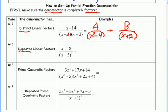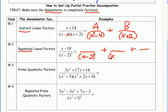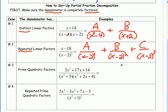Now we have repeated linear factors. A linear factor x minus 2 has degree 1, but it's repeated three times. So I'm going to need three fractions. Going up the ladder: the first denominator is x minus 2 to the first power, then x minus 2 to the second power, and finally x minus 2 to the third power. If this were to the seventh power, I'd have seven fractions. Since these factors are linear on the inside, I'll make degree-zero constants: a, b, and c.